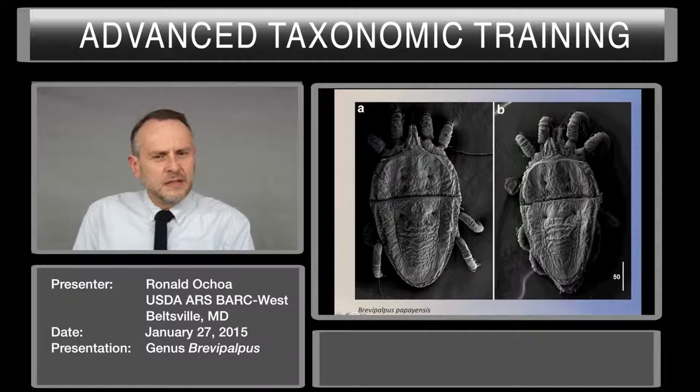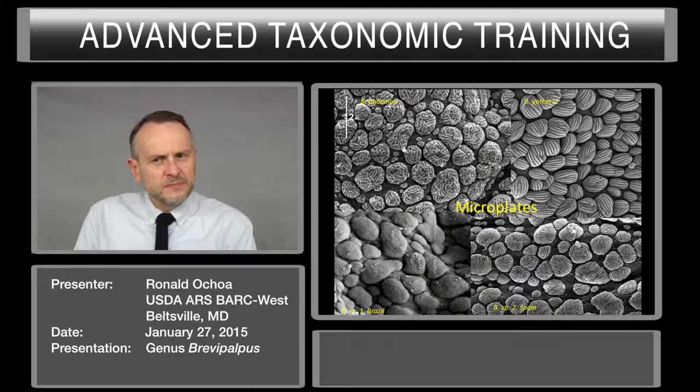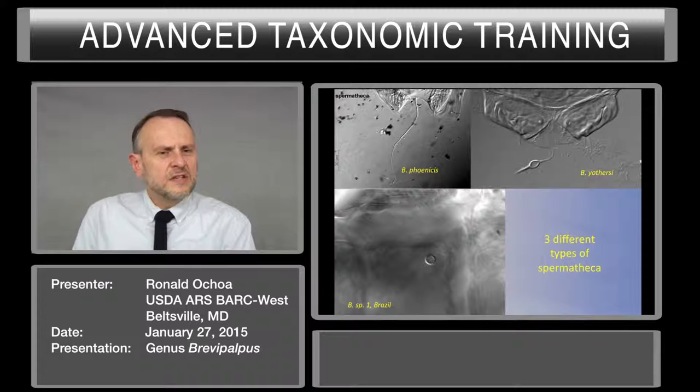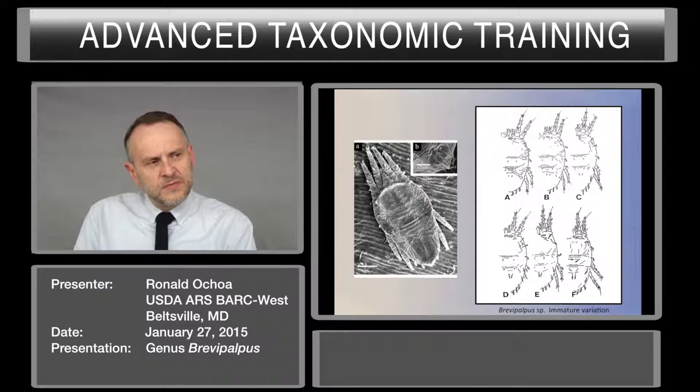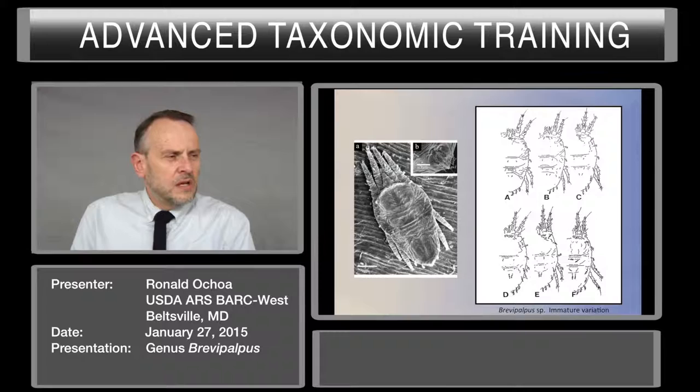Here is Brevipalpus papayensis. It's a very robust mite with very strong groups over the opisthosoma. Microplates have been key to separate these species. But you have another tool to separate these species, and it is the spermathecae — be familiar with the spermathecae. Immatures are important. Observe the kind or type of setae in the immatures, especially E3, F2, F3, H2, H1 — there is variation between them.